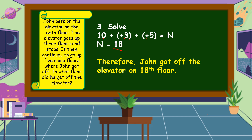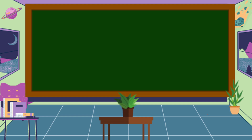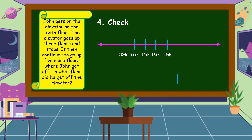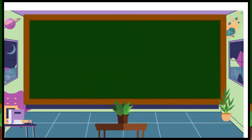Therefore, John got off the elevator on the 18th floor. The last step in solving a word problem is we are going to check using the number line. John gets on the elevator on the 10th floor, the elevator goes up three more floors and stops, then continues to go up five more floors — counting up: 11, 12, 13, then 14, 15, 16, 17, 18. It means that John got off on the 18th floor. Therefore, our answer is correct.